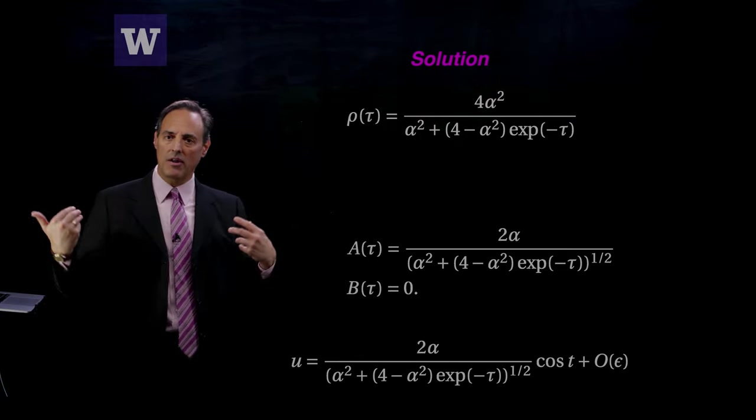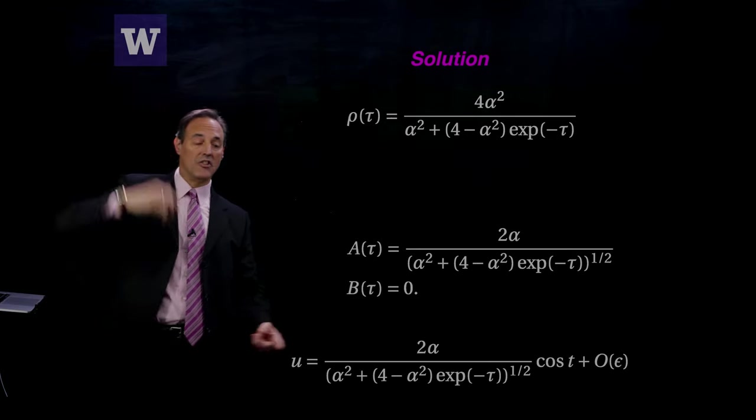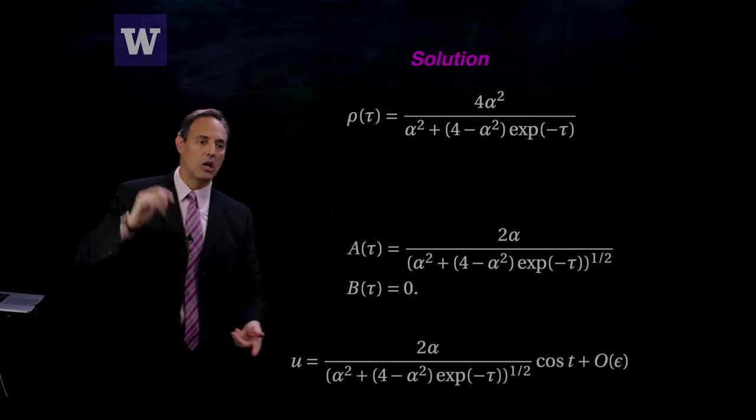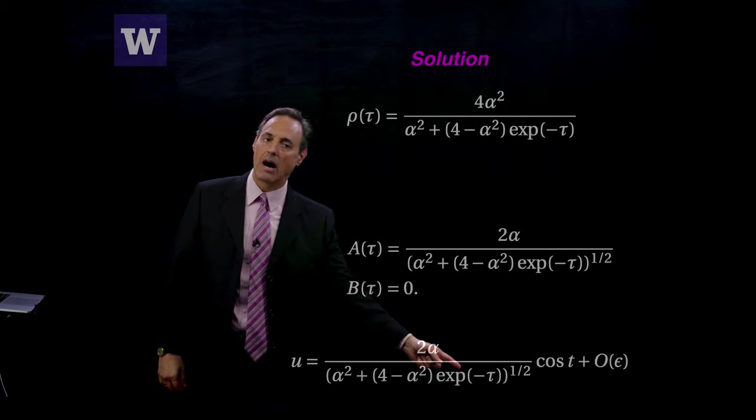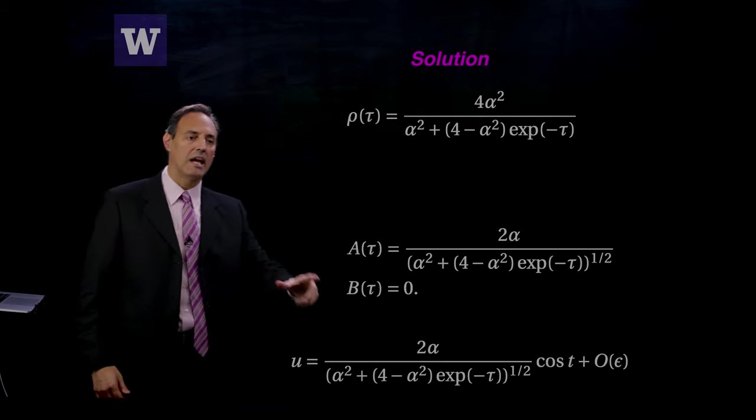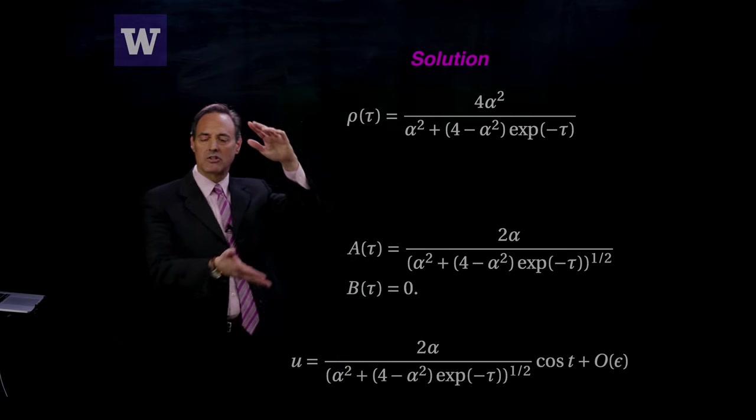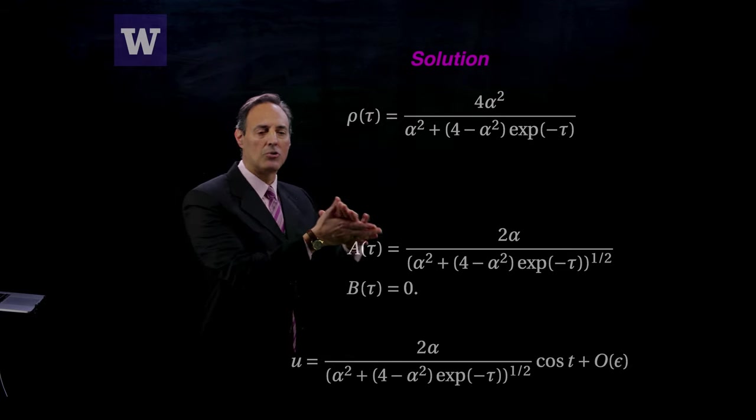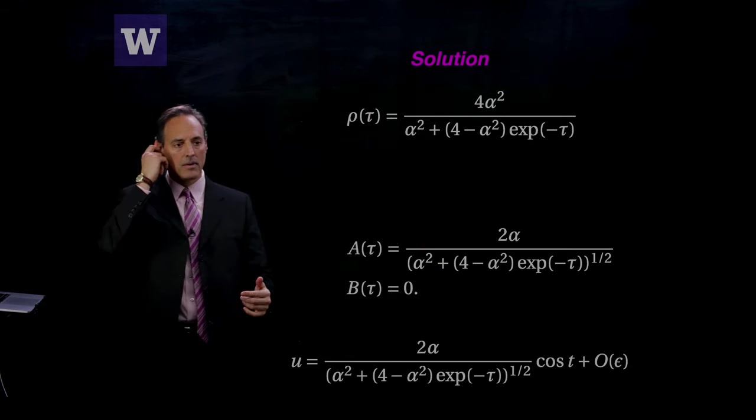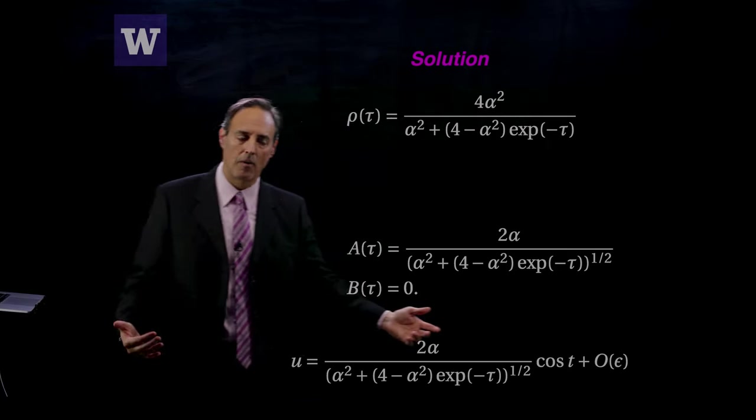You start with the initial conditions at some value of alpha. This thing slowly decays—remember I have that slow damping term—because I have this e^(-τ), so I could put minus epsilon t there, so it slowly decays, and this whole thing takes on a value of 2. So it slowly decays until this thing is just 2 cos t. So not only did I pick up the decay, if I went to higher order I could also pick up frequency shifts.